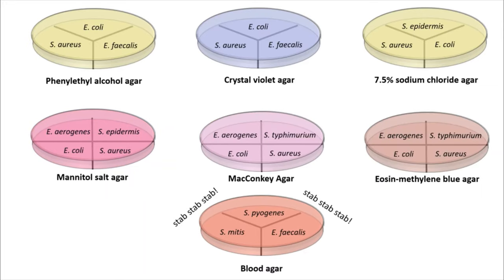So lastly in this video, I'm going to show you what these plates look like in real life and give you some samples of their inoculation. Here I have the seven different differential and selective media plates: the phenyl ethyl alcohol agar plate, the crystal violet agar plate, the 7.5% sodium chloride agar plate, mannitol salt agar, MacConkey agar, eosin methylene blue agar, and blood agar. I have already labeled them with the species that are going to be inoculated, and I'm going to go through and do a single line streak with the loop from our broth stock in each quadrant, then incubate these and take a look at the results.